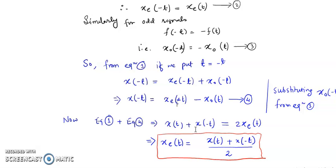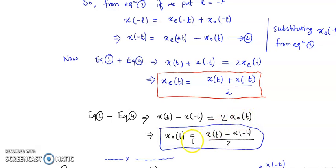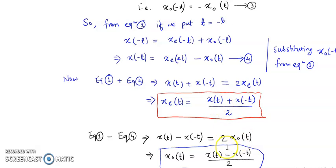If we subtract equation 4 from equation 1, then X(t) - X(-t) = 2Xo(t), since the even components cancel out. So we can write Xo(t) = [X(t) - X(-t)] / 2. This is the odd component of the signal. We have thus derived Xe(t) and Xo(t) in terms of X(t) and its folded version X(-t). These are the expressions for the even and odd parts of any given signal.